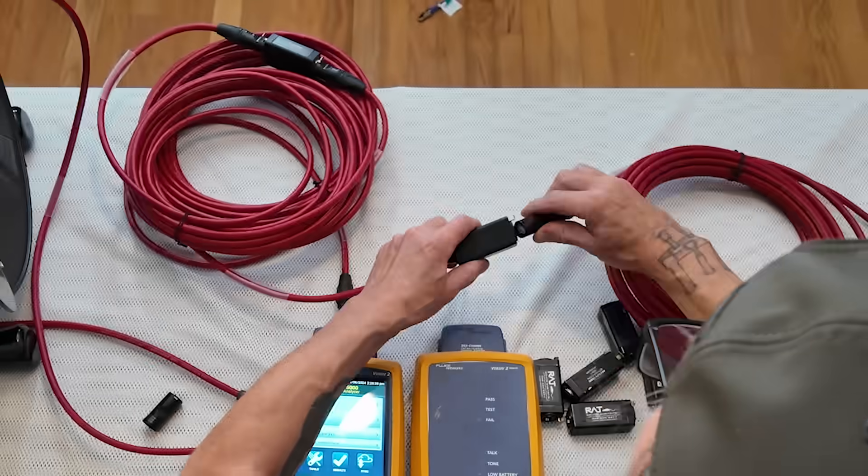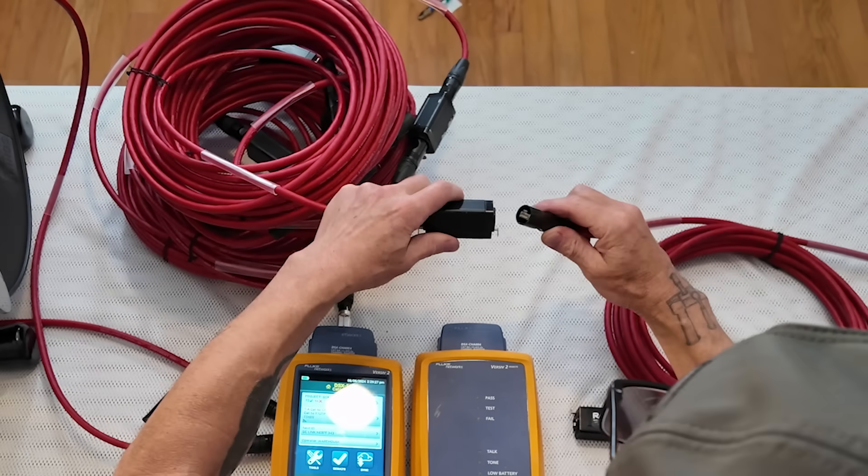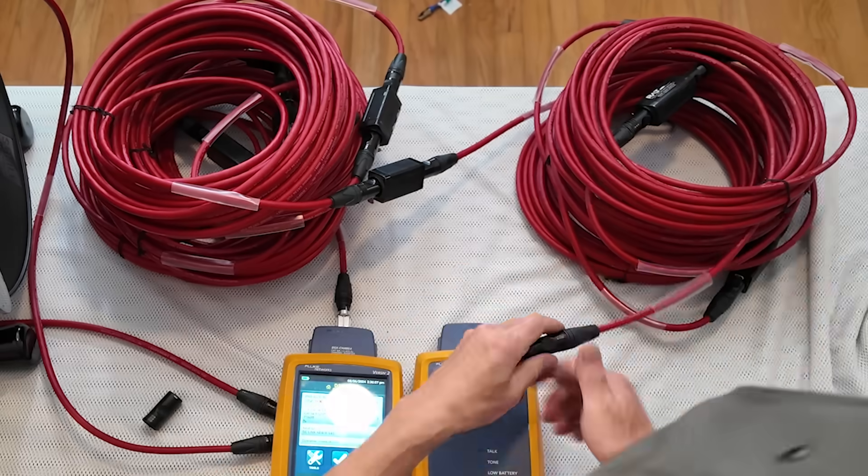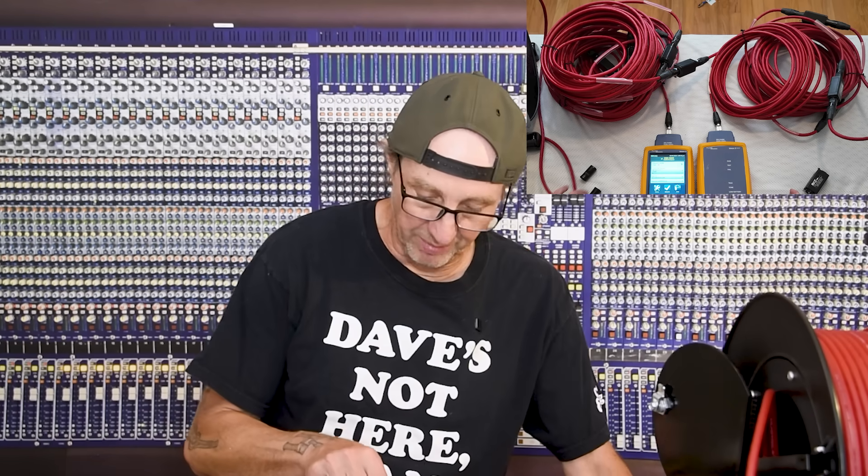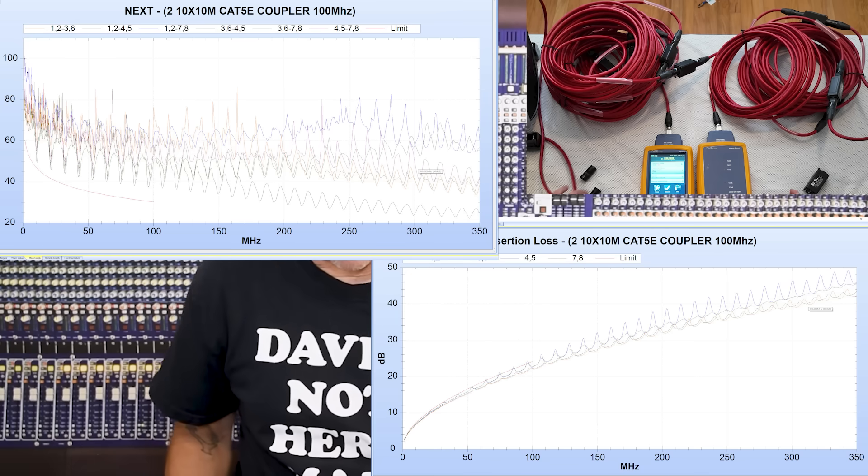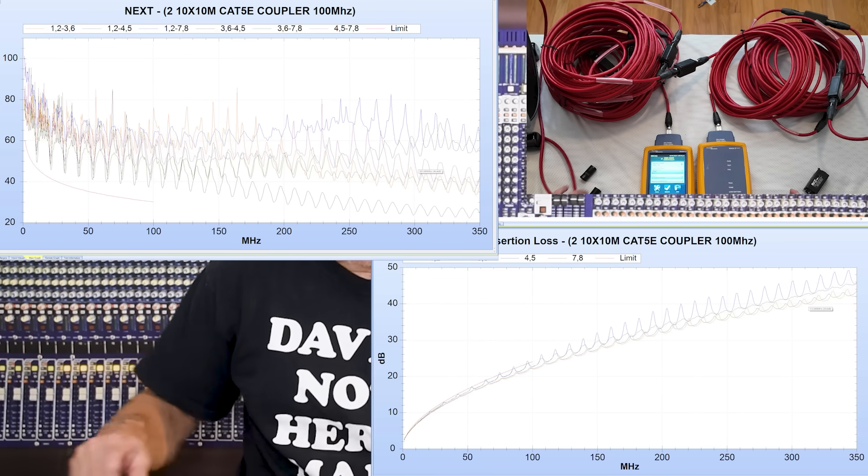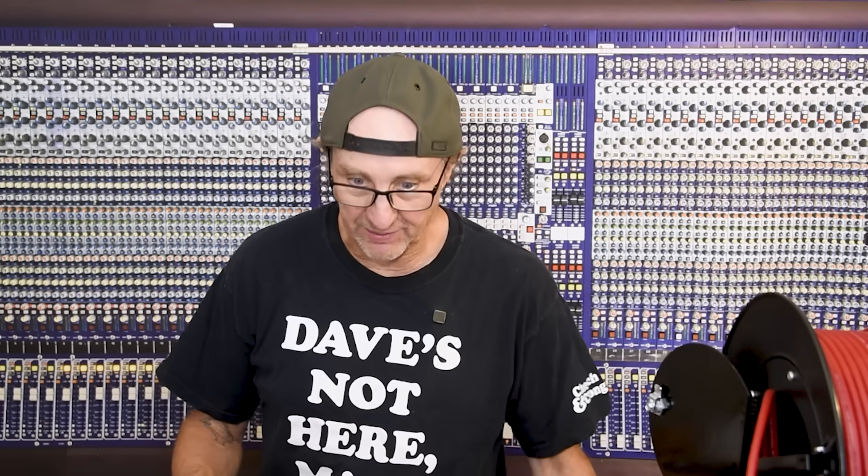Coupler number 2, 3, 4, 5, 6, 7, 8, coupler number 9, and cable number 10. Okay, so let's go ahead and test the CAT5E couplers. Oh, we have a failure here. Oh, wow. Look at all those peaks and valleys. Those couplers are causing some sort of frequency-related insertion loss issues.